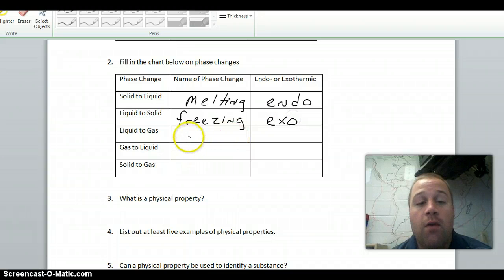From a liquid to a gas is vaporization. We're going from a more ordered liquid that's not moving around as much to a less ordered gas. So we gain energy to do that and we go endothermic.